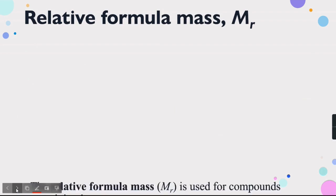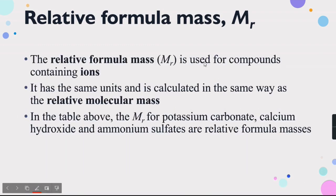Relative formula mass (also Mr) is used for compounds containing ions. It has the same definition and is calculated in the same way as relative molecular mass. The Mr values for potassium carbonate, calcium hydroxide, and ammonium sulfate shown in the table are relative formula masses. So we use the terms relative molecular mass and relative formula mass interchangeably depending on whether we have molecules or ionic compounds.